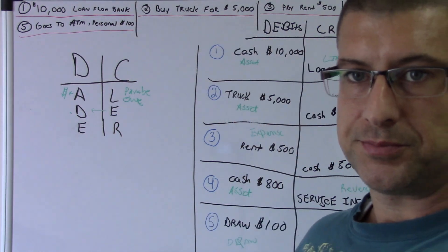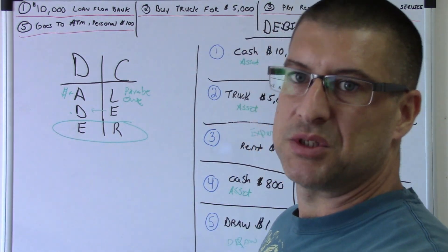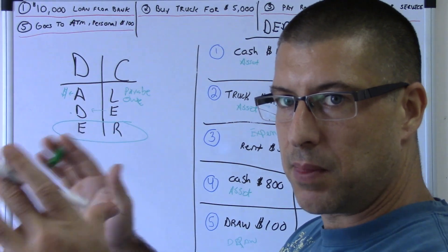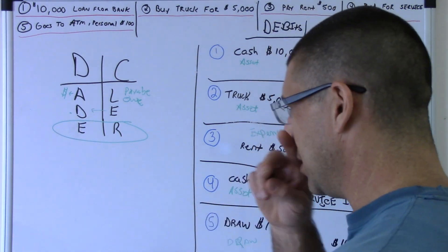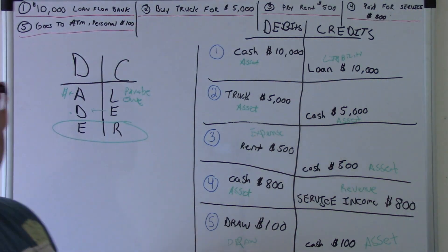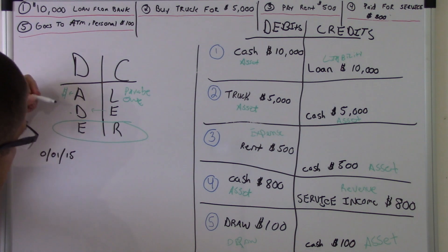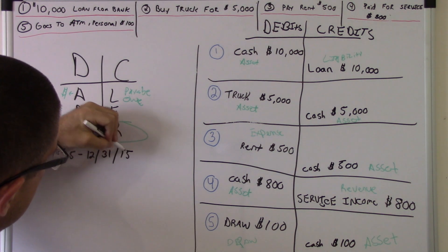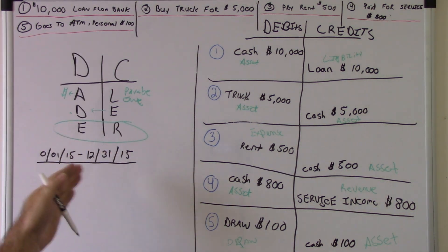Let's do the income statement. The income statement, like it implies, is how much income you made during a certain period of time. Usually it runs on the calendar year. So we'll run from January 1st through December 31st of the same year — that will be the income statement for that certain period.